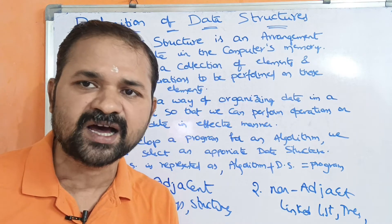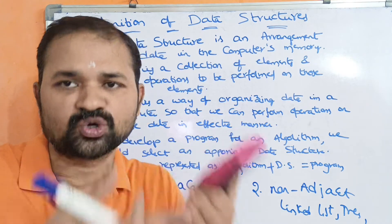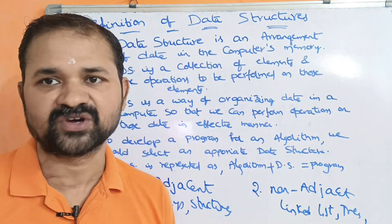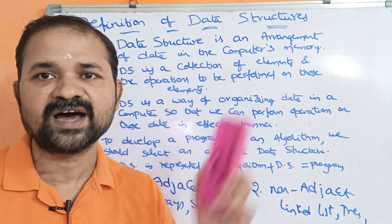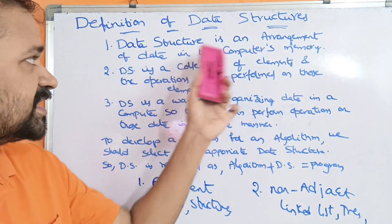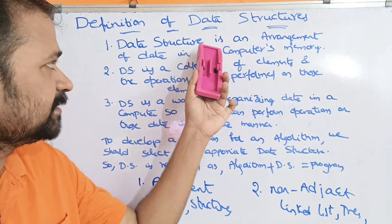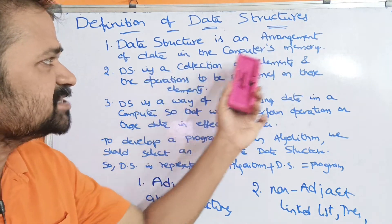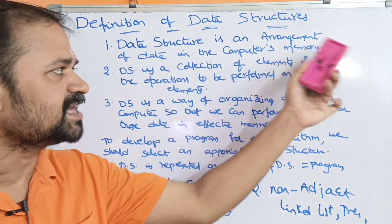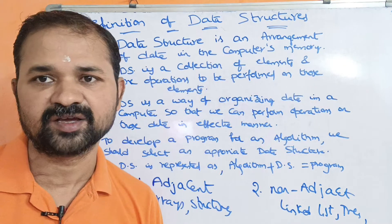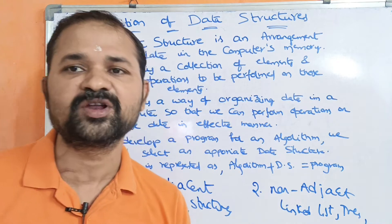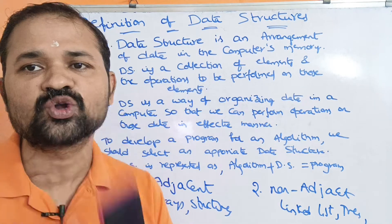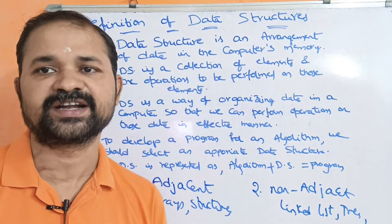For linked lists, trees, and graphs, if you have any available memory space, you can store data there — non-adjacent memory locations are used. So that is data structure. First of all, data structure is an arrangement of data in the computer's memory — the data is stored in a computer's memory.